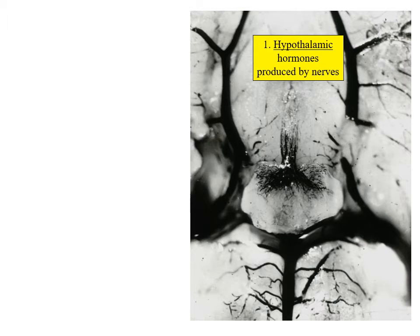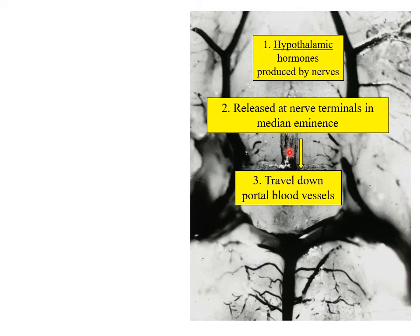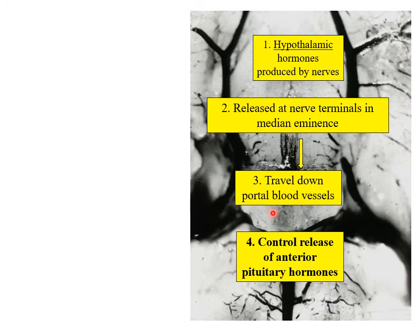In the first lecture we looked at how Geoffrey Harris really developed the theory that hypothalamic hormones were produced by nerves which were released at nerve cell terminals in the median eminence. They travelled down the portal blood vessels and hit the pituitary where they controlled the release of each of the anterior pituitary hormones.